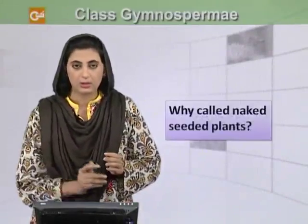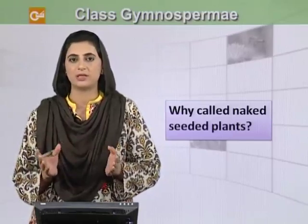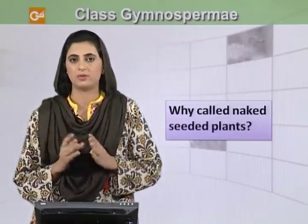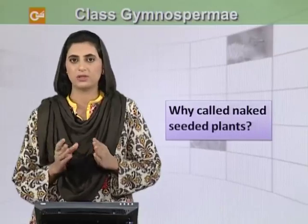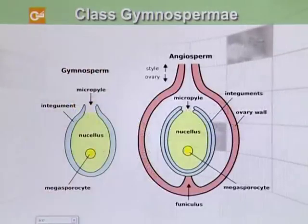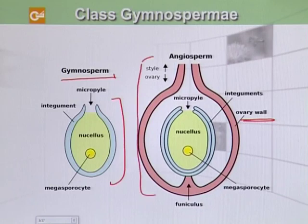The next class of Subdivision Tracheophyta is Class Gymnospermia. They are a successful group of plants, worldwide in distribution, and they comprise about one-third of the world's forests. They are also called naked-seeded plants because their ovule is not covered by an ovary wall or fruit. The gymnosperm seed is naked, while in angiosperms the seed is covered by the ovary wall.